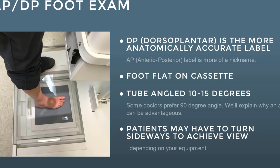For the DP/AP foot exam, the patient stands on the cassette with feet shoulder-width apart, equal weight distribution, facing forward. The camera is already angled at 15 degrees rather than shooting straight down. We center right in the middle of the foot, and collimate the x-ray light to close in the field and reduce excess radiation to the patient. Place a right marker inside the light field, off to the side of the foot.